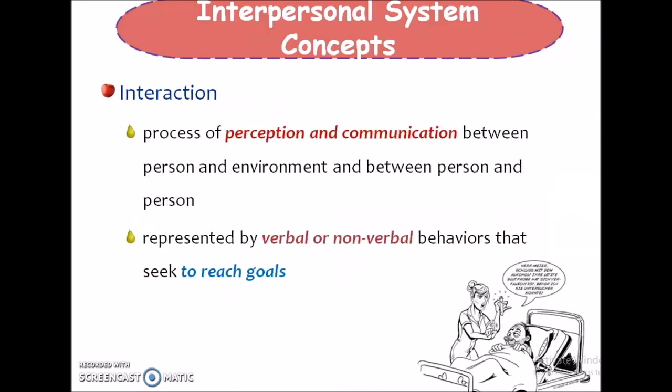The first concept of the interpersonal system is interaction. Interaction is the process of perception and communication between person and environment and between person and person. It is represented by verbal or nonverbal behavior that seeks to reach a goal. The main ultimate aim of interaction is to achieve the goal.